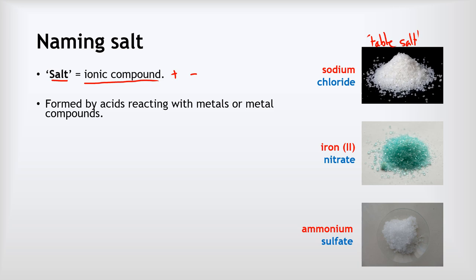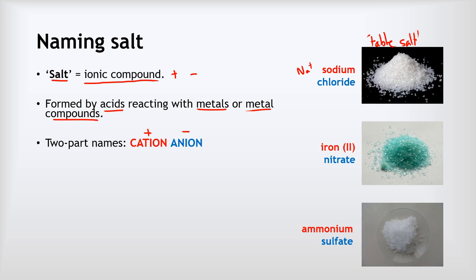Salts are formed by acids reacting with either metals or with metal compounds. They've always got these two-part names where the first word is the cation and the second word is the anion. For example, sodium chloride is made from positive sodium ions and negative chloride ions. Iron(II) nitrate is made from positive iron(II) ions and negative nitrate (NO₃⁻) ions.